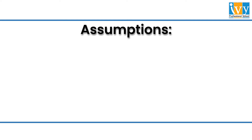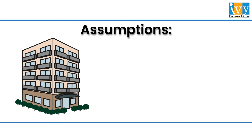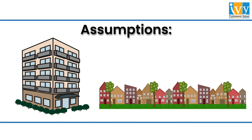First assumption is that the society has two types of houses: apartments as well as row houses. Secondly, the apartment blocks are numbered from 1 to 30, meaning there are 30 apartment blocks. Thirdly, there are 4 row house lanes, and in each lane there are 8 row houses, bringing us to 32 row houses in total.